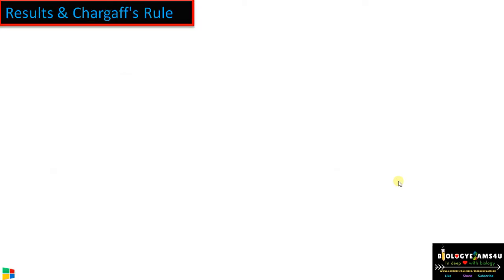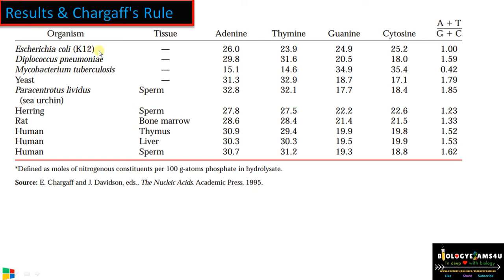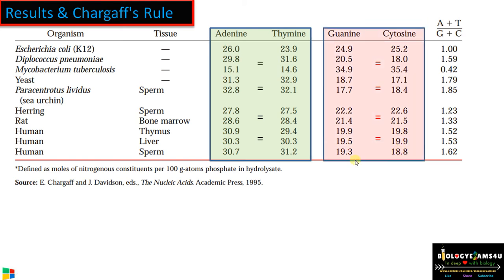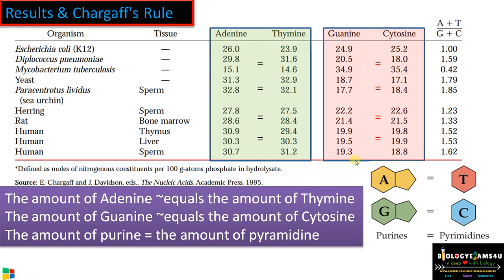The results show that in E. coli adenine is 26 moles whereas thymine is 23; in Diplococcus it is 29 and 31; whereas in rat it is 28 moles of adenine and 28 moles of thymine. From this he deduced that the amount of adenine is approximately equal to the amount of thymine. This is the first part of Chargaff's rule. Here also, the concentration of guanine — in humans it is 19.9 moles whereas cytosine is 19.8 moles.